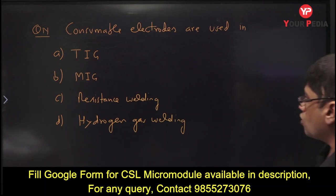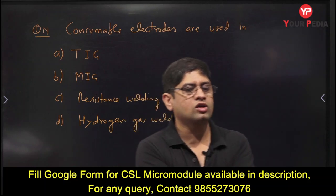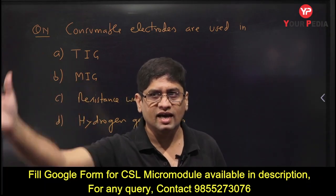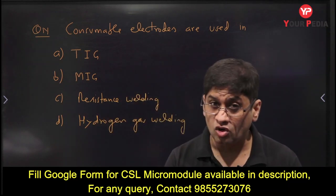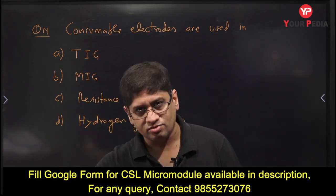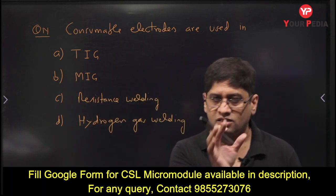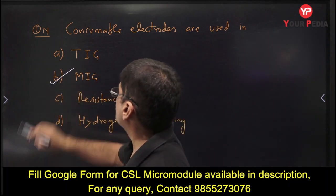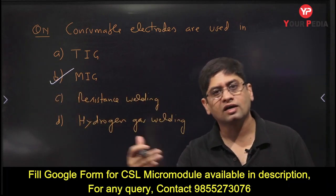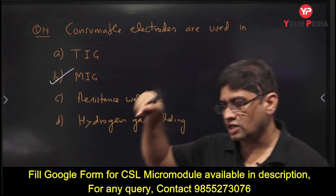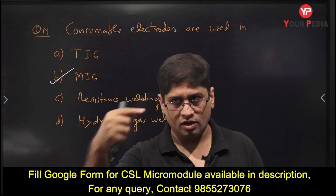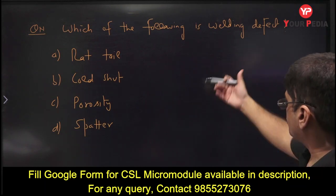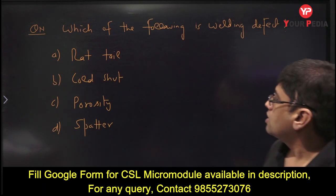Next: consumable electrodes. In TIG (Tungsten Inert Gas) welding, tungsten is a non-consumable electrode. In MIG (Metal Inert Gas) welding, there is metal deposition, and a consumable electrode is used. In MIG welding, there is a continuous supply of wire electrode that keeps getting consumed — it is a wire electrode used continuously.